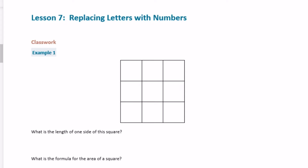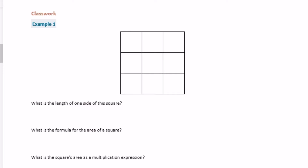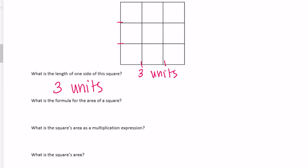6th grade module 4 lesson 7 classwork: replacing letters with numbers. Example 1 — we have a square broken up into 3 by 3 units. The length of one side is 3 units. For the area of a square, we take one side and multiply by the other.